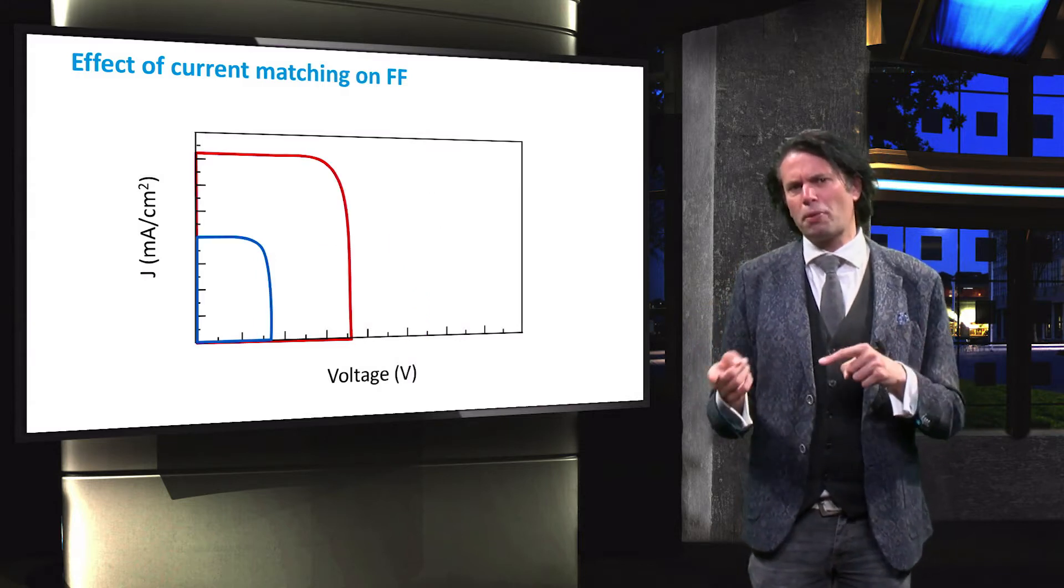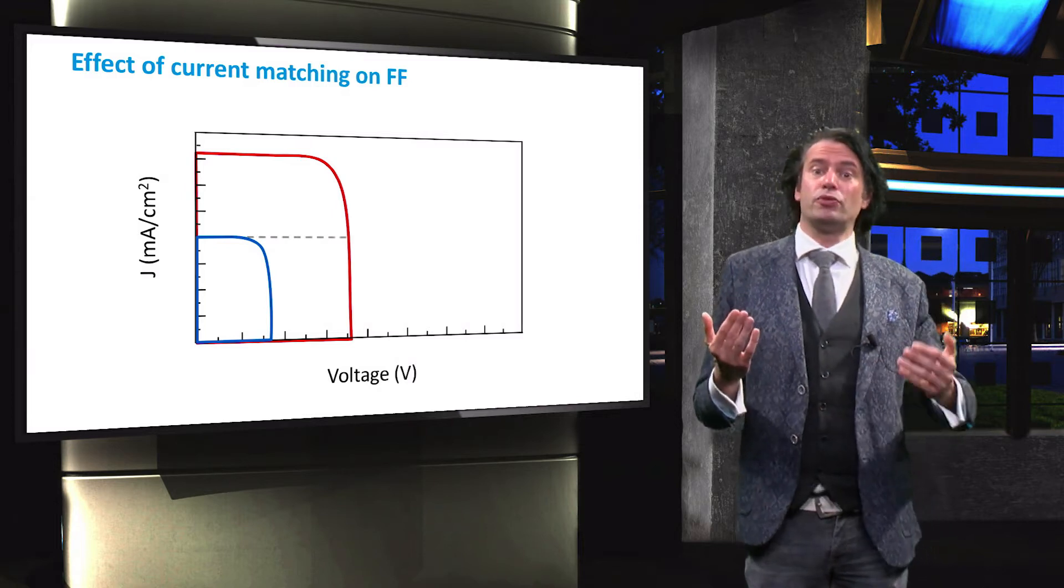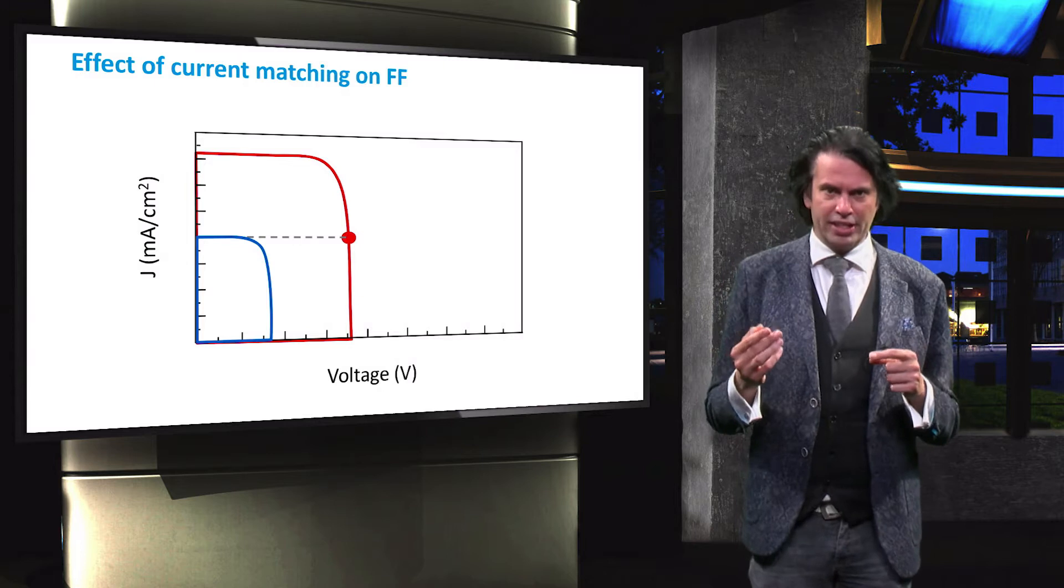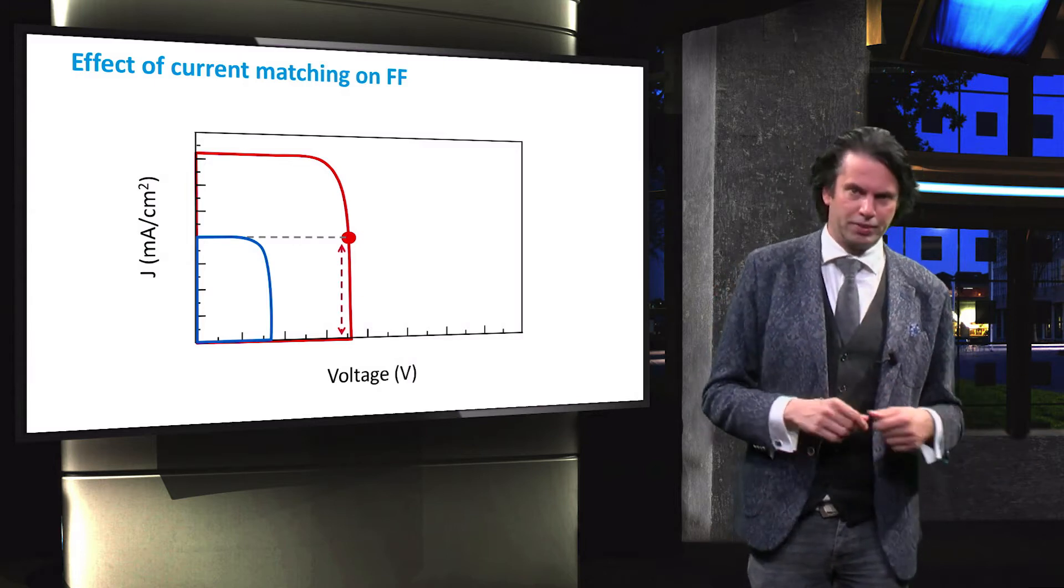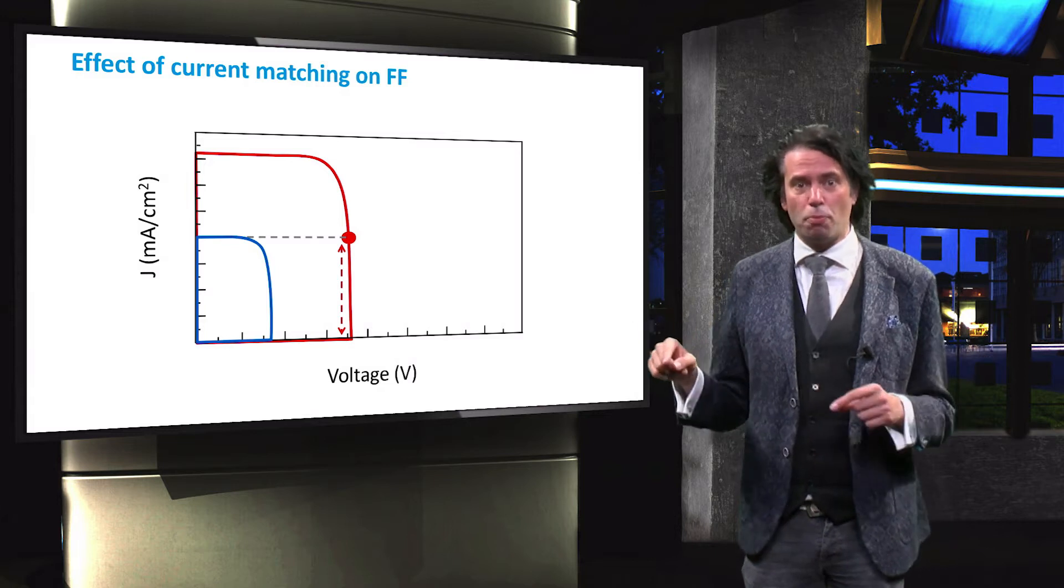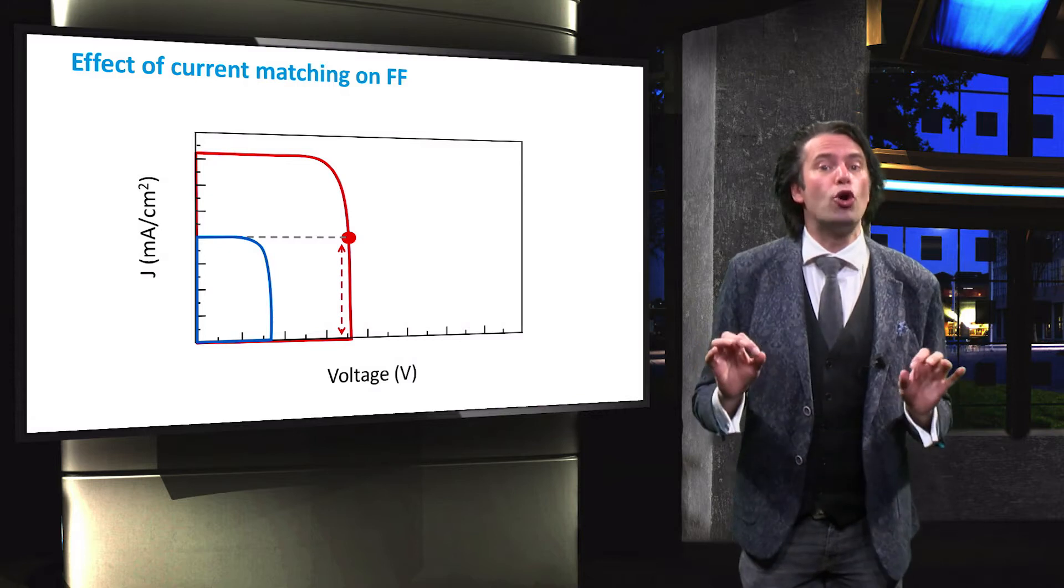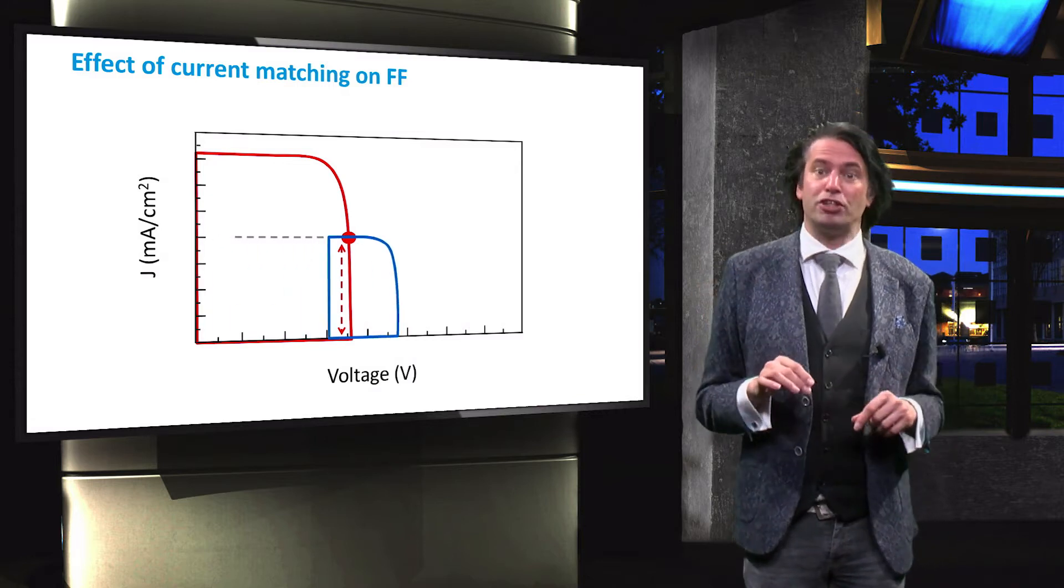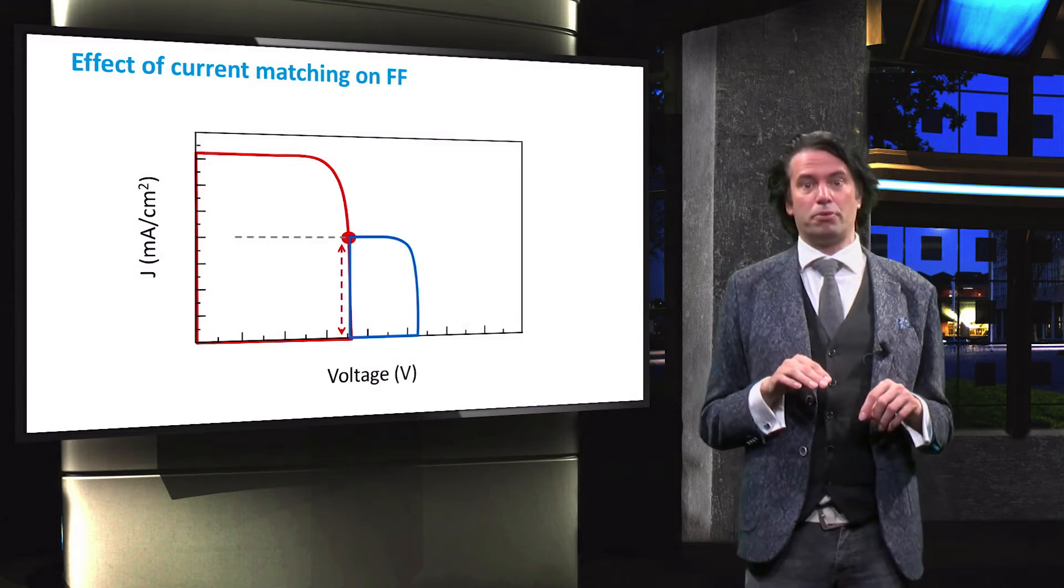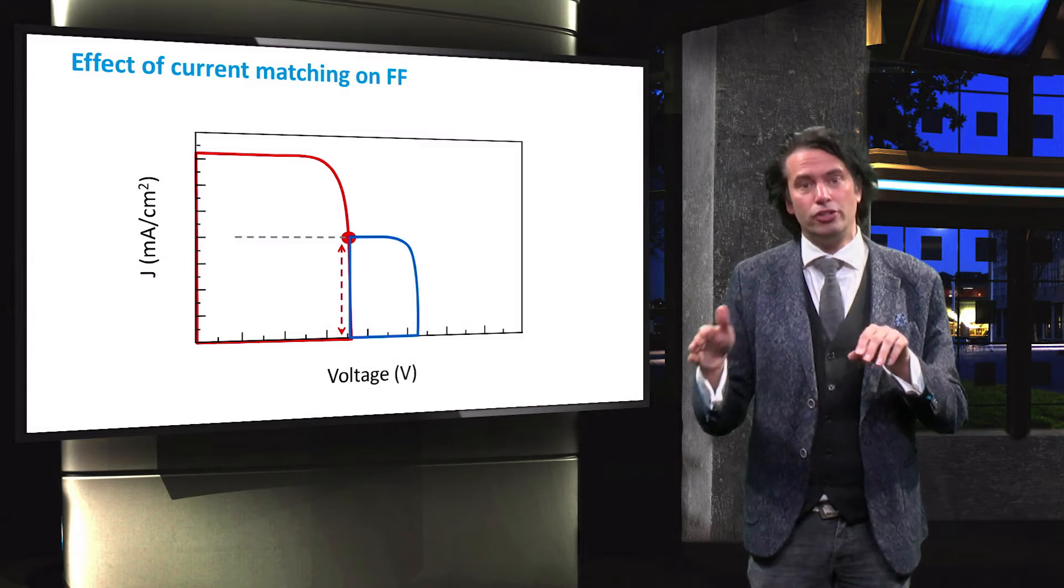Let's consider the situation in which the bottom cell is the current limiting cell. The current range in which the top cell is operating is now limited by the current range of the bottom cell. This means that the top cell is operated in the indicated range again, operating at a voltage close to the open-circuit voltage under illumination. This means that the shape of the JV curve around the maximum power point is mainly determined by in this case the bottom cell.